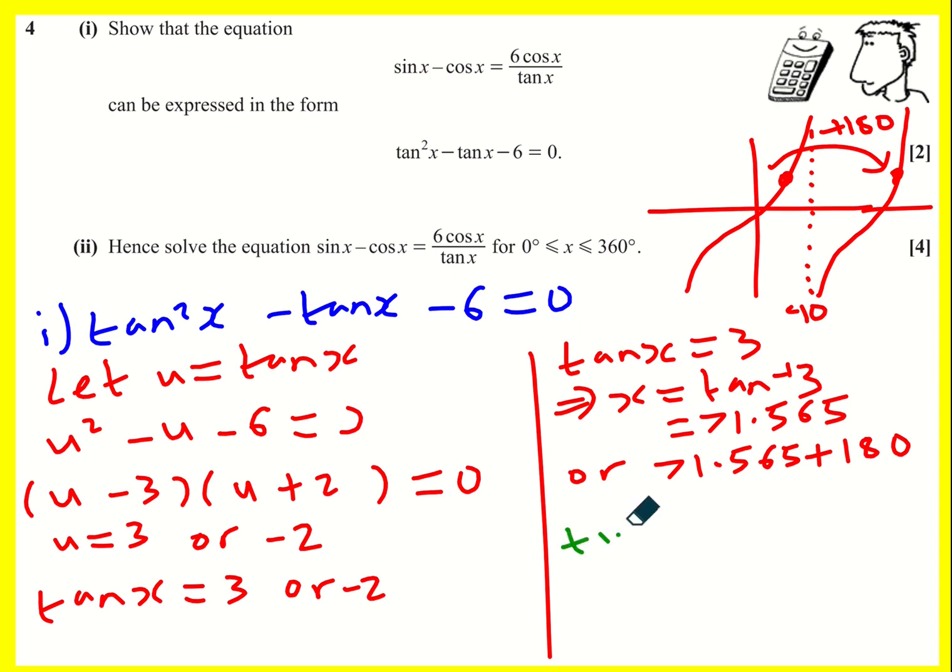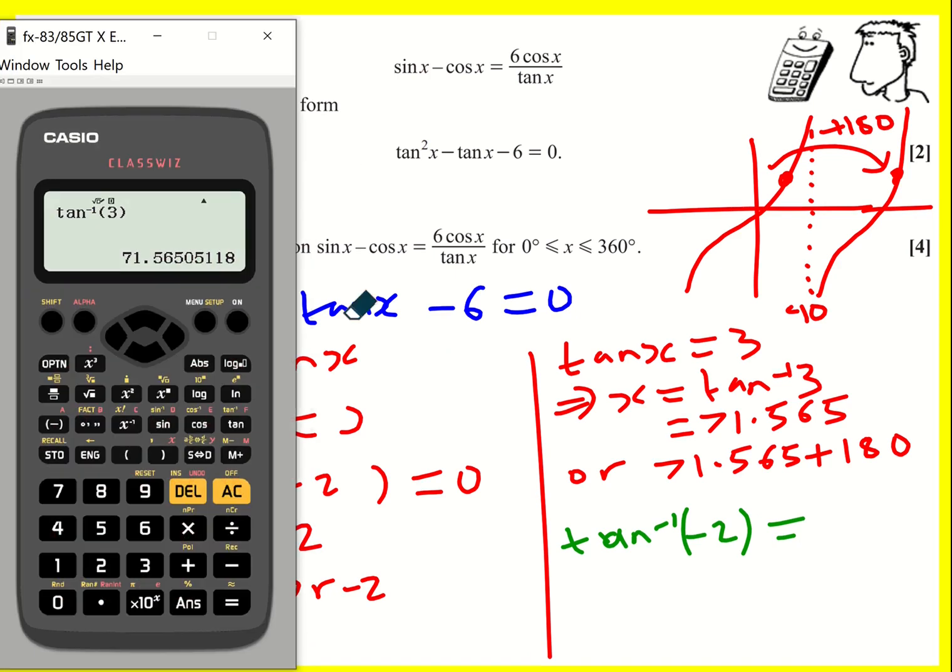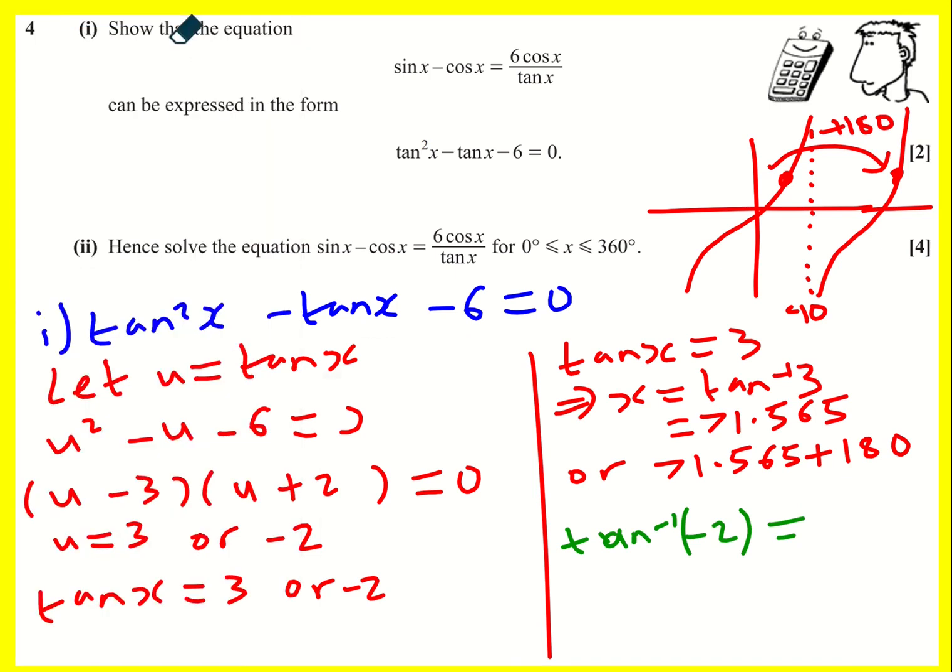Okay, let's do the other one now. Inverse tan of minus 2. That gives me minus 63.43. Okay, that's not going to be a valid solution. It's not in our range.